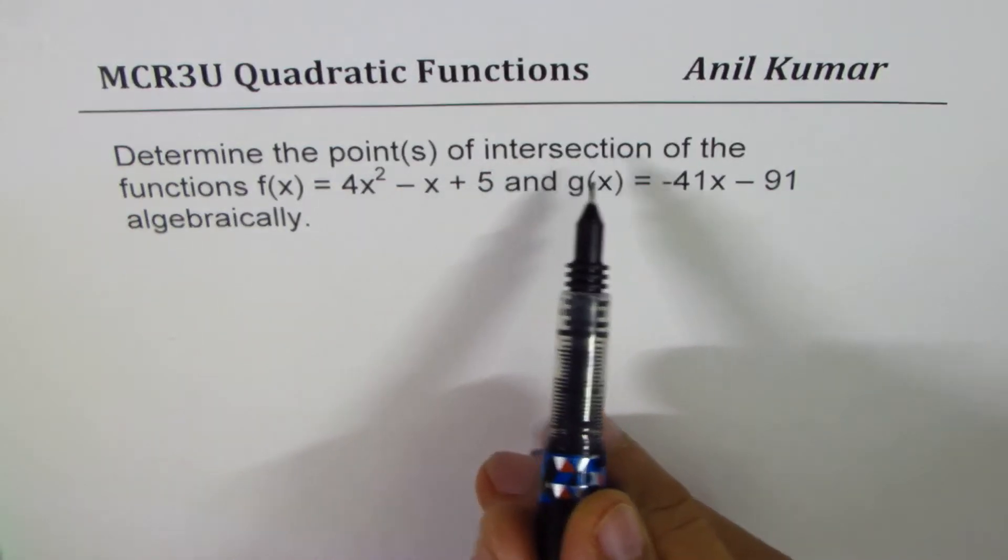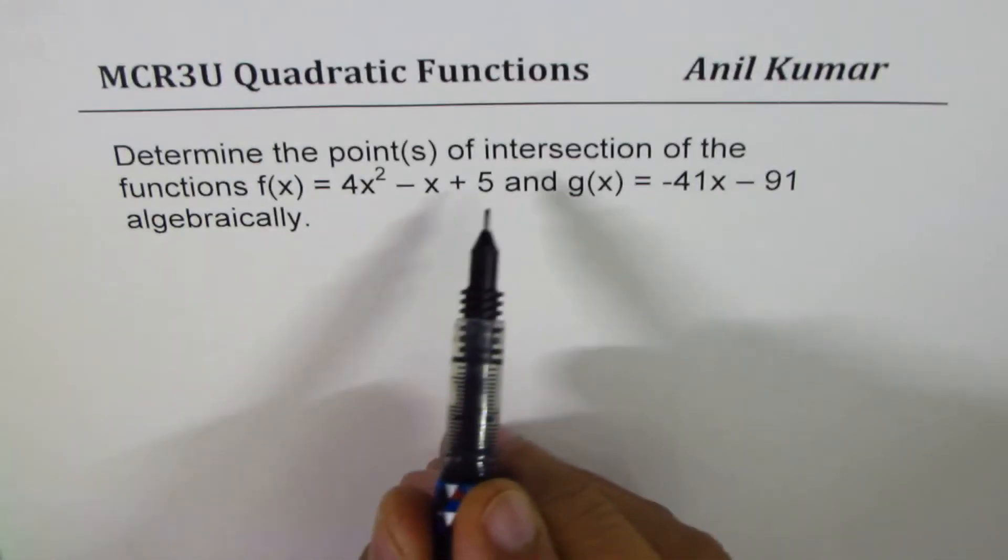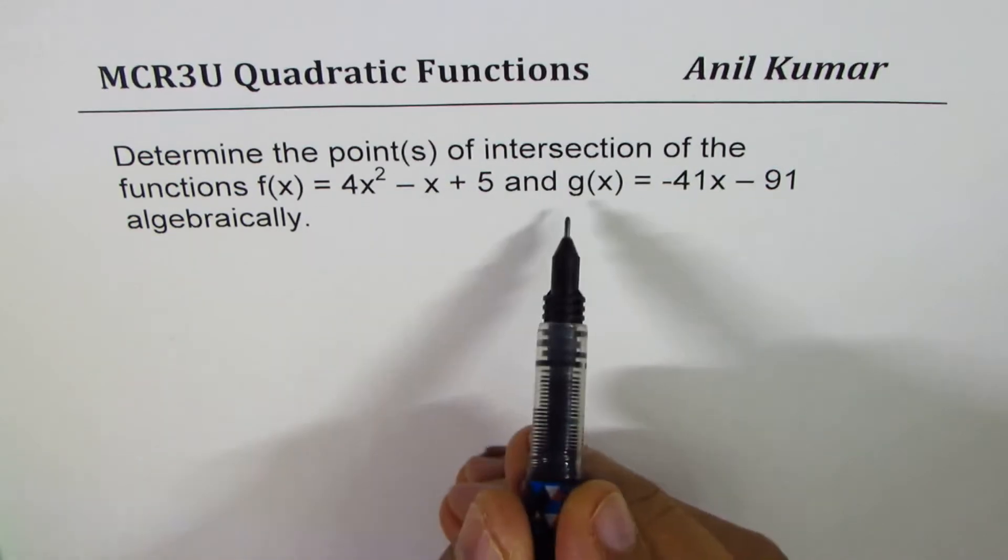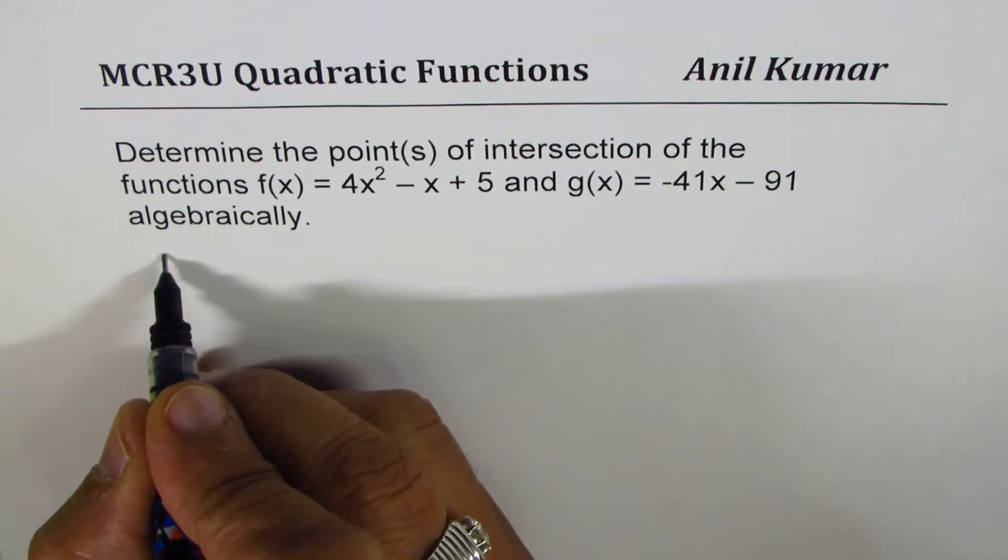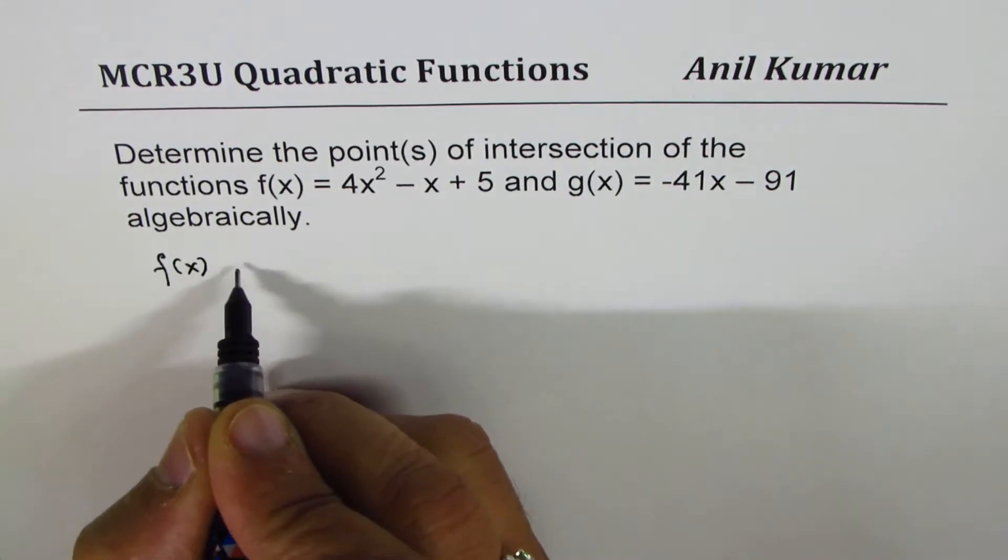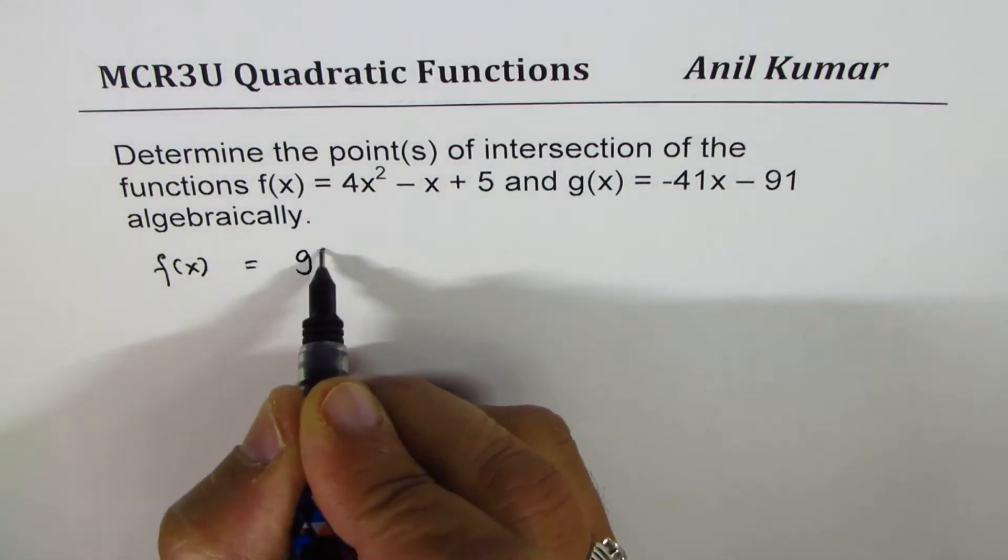When we say points of intersection, that really means that at that point, both functions will have the same value. So we're looking for f(x) = g(x).